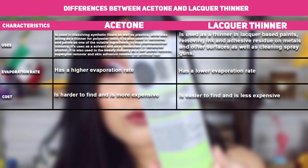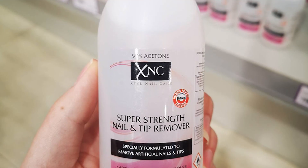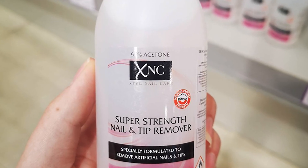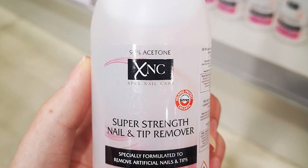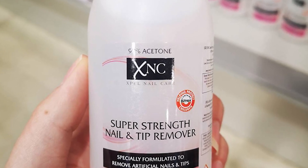Evaporation rate: while acetone has a higher evaporation rate, lacquer thinner has a lower evaporation rate. Additionally, acetone is harder to find and is more expensive, while lacquer thinner is easier to find and less expensive. The importance of acetone and lacquer thinner cannot be overlooked. Care should, however, be taken when handling these items as they can be toxic.